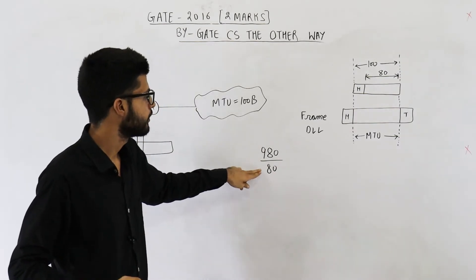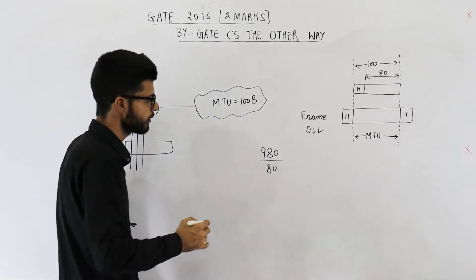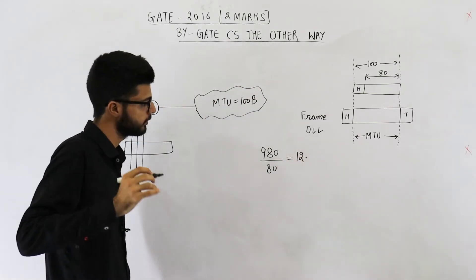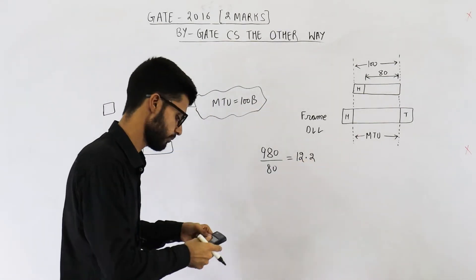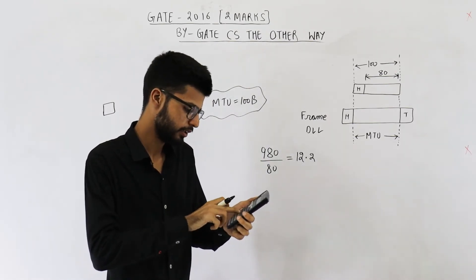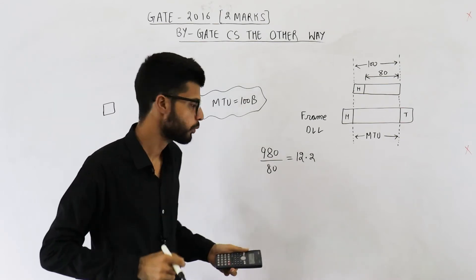So it is 8 into 12, 12 point something. This is 12 point 25, 980 divided by 80. Yeah, 12.25 is correct.